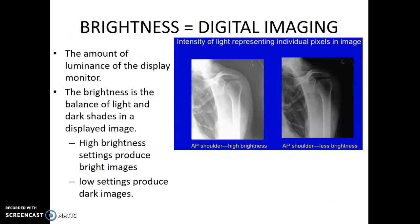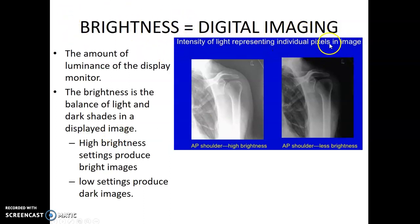Brightness is another digital term. Brightness is the amount of luminance displayed on the monitor — the balance of light and dark shades displayed on the image. This is similar to the lookup table. Brightness is controlled by the individual pixels on the image. MAS does not control brightness. Put lookup table and brightness into their own separate categories — those are digital terms.